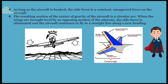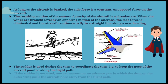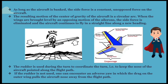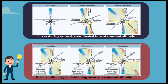When the wings are brought level by an opposing motion of the ailerons, the side force is eliminated and the aircraft continues to fly in a straight line along a new heading. The rudder is used during the turn to coordinate the turn — that is, to keep the nose of the aircraft pointed along the flight path. If the rudder is not used, one can encounter an adverse yaw in which the drag on the outer wing pulls the aircraft nose away from the flight path. Look at these pictures showing forces during a normal coordinated turn at constant altitude, as well as normal, slipping, and skidding turns.